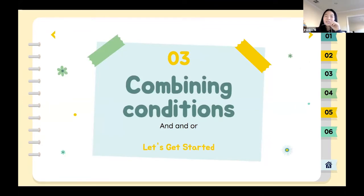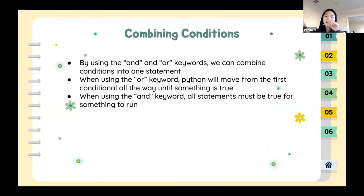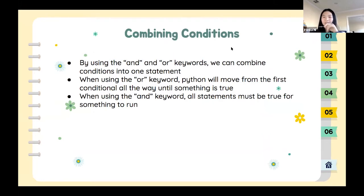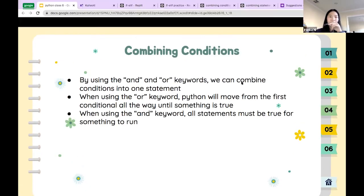Now we're going to move on to combining conditions — basically just two: 'and' and 'or'. By using the 'and' and 'or' keywords we can combine statements into one. With 'or', Python moves from the first condition until something is true — like if I have a pen, or a pencil, or an eraser, I'm ready to study. It checks each one until it finds a true condition. With 'and', all statements must be true — I'd need a pen, a pencil, AND an eraser.